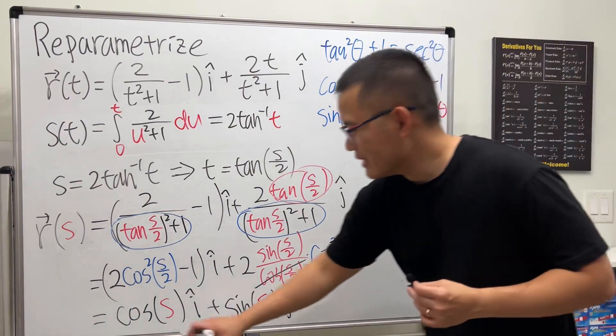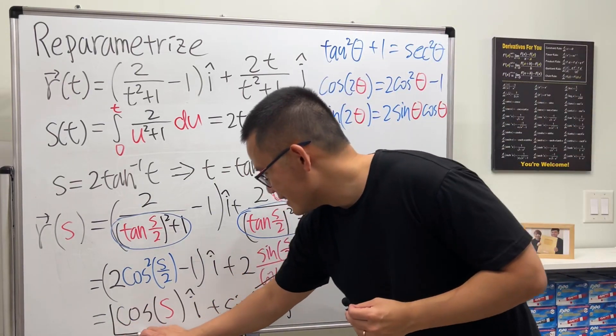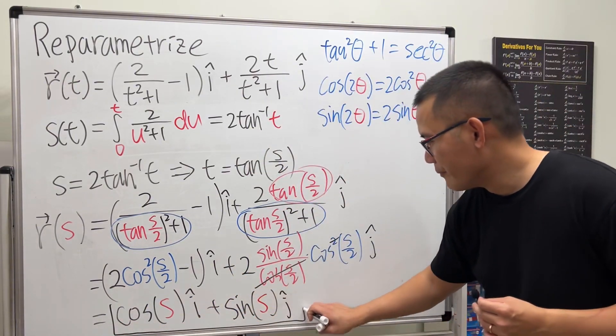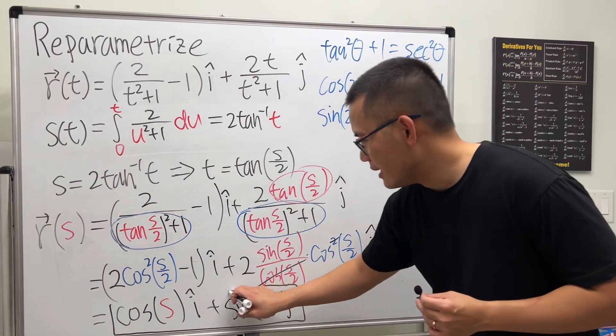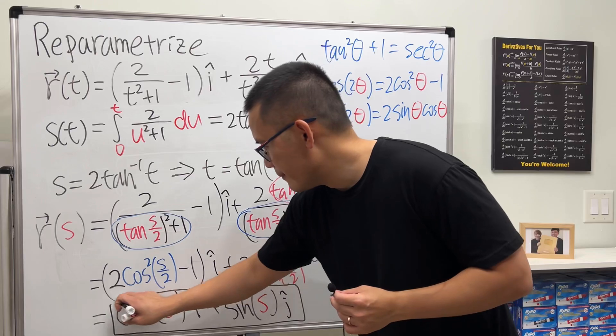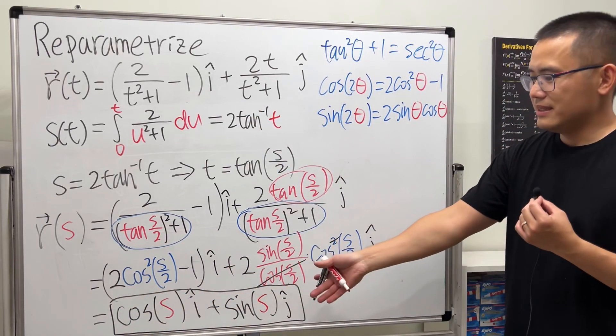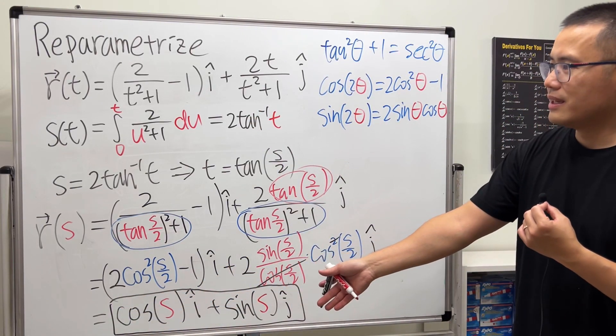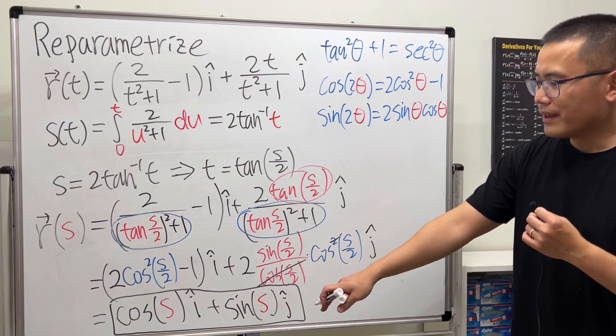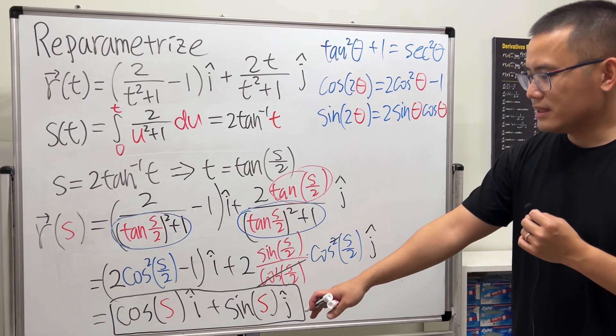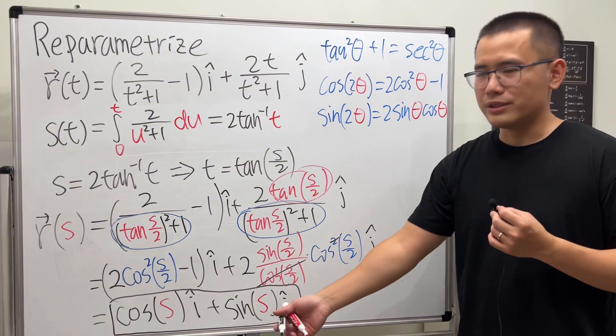So r of s equals cos(s) i + sin(s) j. For s greater than zero, you can see that this is actually just a circle.